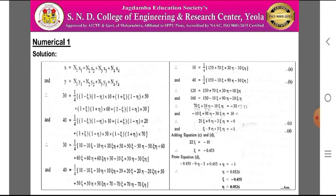Therefore, substituting x = 30 and y = 40 by putting the values of N1, N2, N3, N4: 30 = (1/4)[(1−epsilon)(1−eta)·10 + (1+epsilon)(1−eta)·50 + (1+epsilon)(1+eta)·60 + (1−epsilon)(1+eta)·30], and 40 = (1/4)[(1−epsilon)(1−eta)·10 + (1+epsilon)(1−eta)·20 + (1+epsilon)(1+eta)·50 + (1−epsilon)(1+eta)·70].